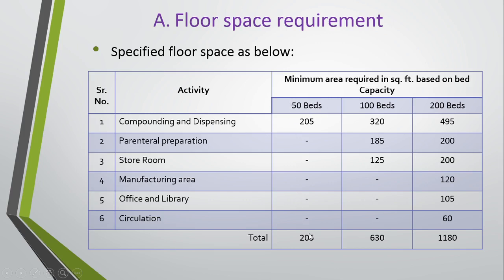You can see here: for 50 beds, a different space is required; for 100 beds, a different space; for 200 beds, a different space. It depends on the bed capacity of that hospital. The minimum space required in square feet is based on bed capacity. For a 50-bed hospital, 205 square feet is required for smooth functioning, where only compounding and dispensing takes place.